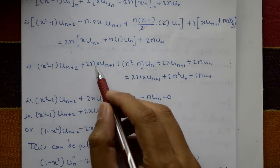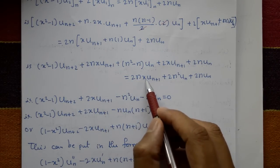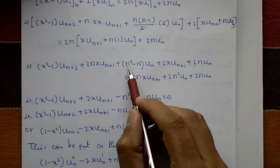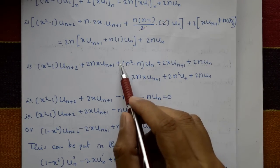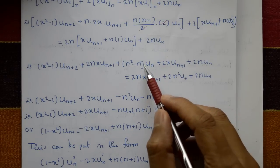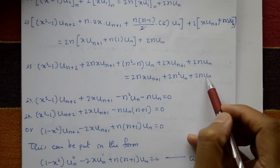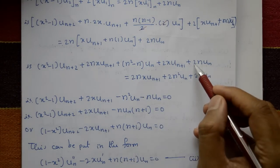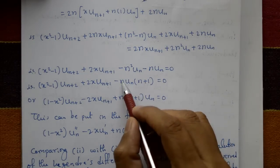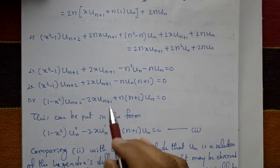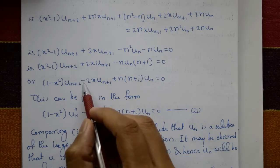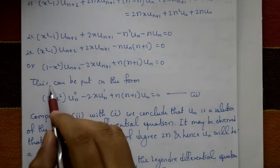After simplification: (x² - 1)·u_{n+2} + 2nx·u_{n+1} plus terms. The 2nx·u_n terms cancel; remaining we get 2x·u_{n+1}. Then n²·u_n and shifting left-hand side: minus n²·u_n equals minus n²·u_n, and minus n·u_n remains.